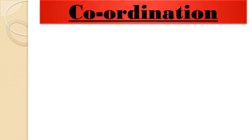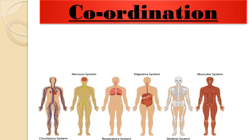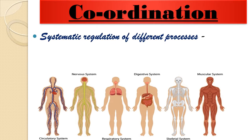Before looking at coordination in plants, let's first understand what coordination is. We have seen in our previous video that several different organ systems function in a multicellular organism. In the human body there are systems like the digestive system, nervous system, circulatory system, respiratory system, skeletal system, muscular system, and many more.